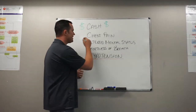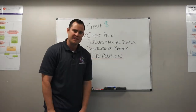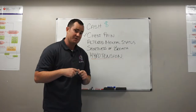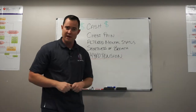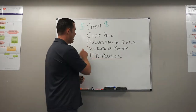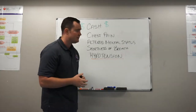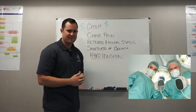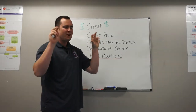Just because a patient has CASH signs — chest pain and a heart rate greater than 150 — doesn't automatically mean you're going to synchronize cardiovert them. That's what you need to determine as a paramedic. For example, I had a 17-year-old female with a heart rate of 182, chest pain, and shortness of breath — she was crying because her boyfriend broke up with her. She had two CASH criteria, but should you shock her? No. She did not meet technical unstable criteria.